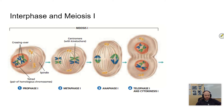During prophase, chromosomes are going to form, except in this case those homologous pairs are going to line up with one another. We'll talk more about crossing over and tetrads in the next video, but here those homologous pairs line up together and form structures called tetrads. Then in metaphase they line up in the middle.